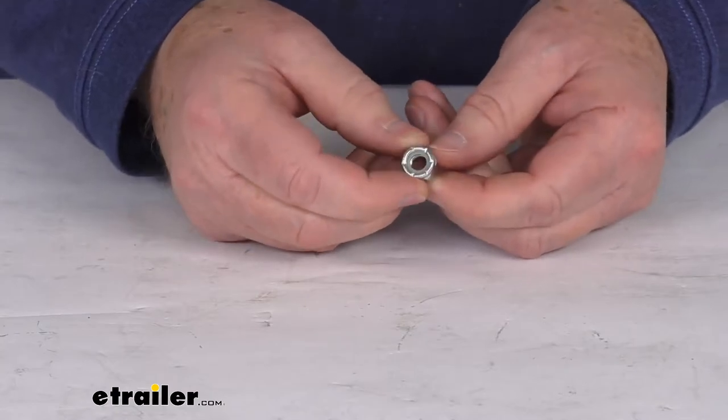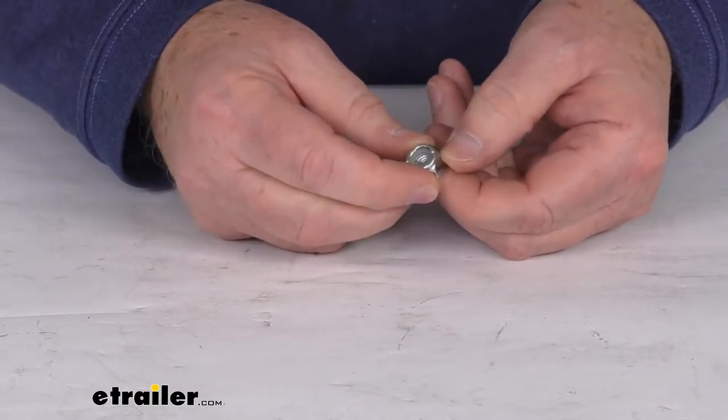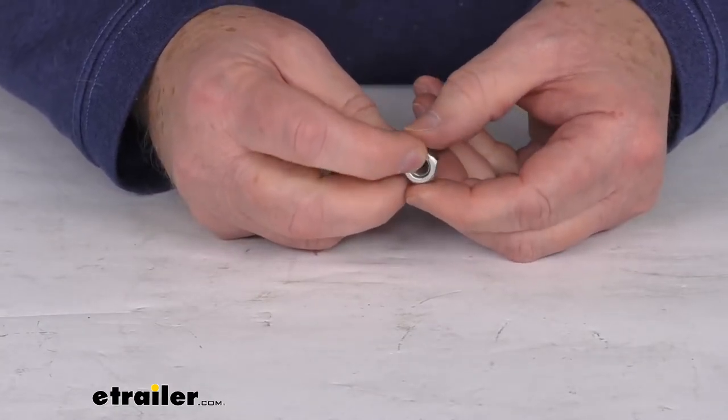Today we're going to take a look at this 5 sixteenths of an inch diameter zinc plated nylon lock nut for a spring keeper bolt.